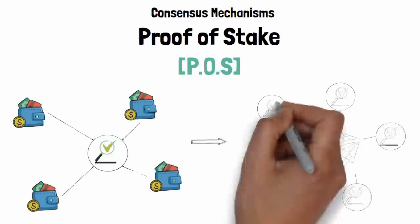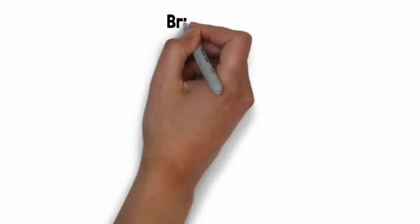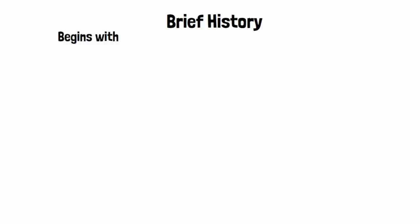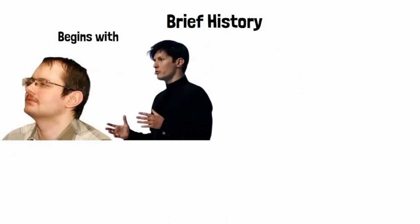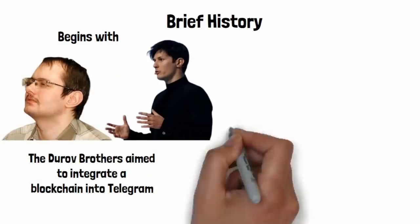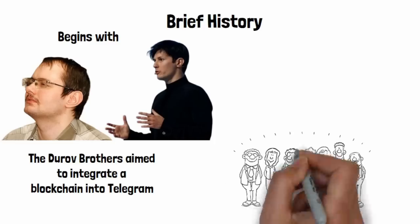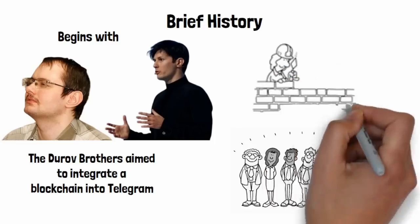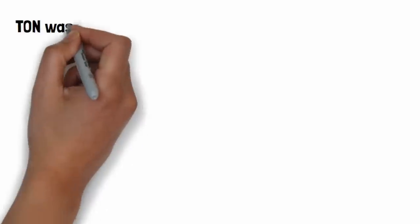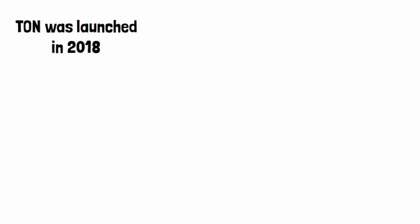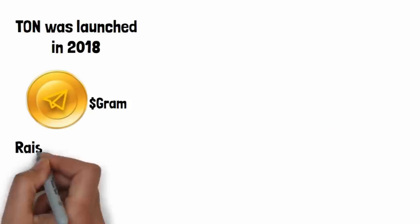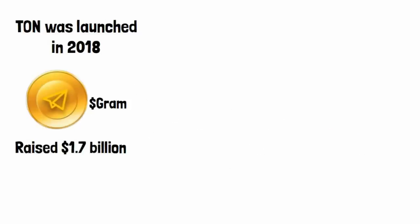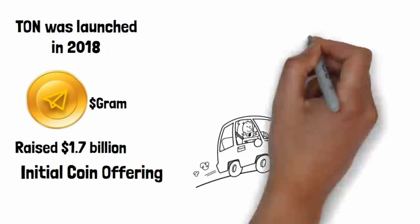Now let's talk about how TON came to life. The story begins with Telegram Messenger founders Nikolai and Pavel Durov. They aimed to integrate a blockchain into Telegram to support their massive user base, but couldn't find a suitable solution, so they decided to build one from scratch. In 2018, they introduced the Telegram Open Network, TON, along with its cryptocurrency Gram, raising a staggering 1.7 billion dollars in one of the largest ICOs ever.